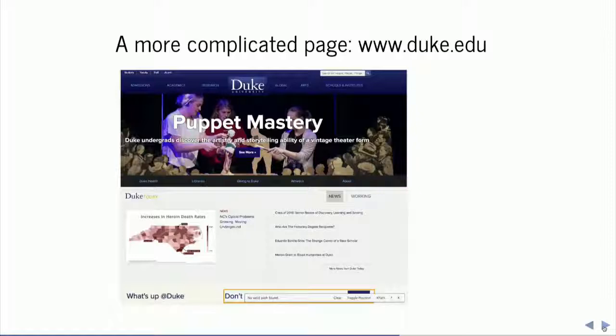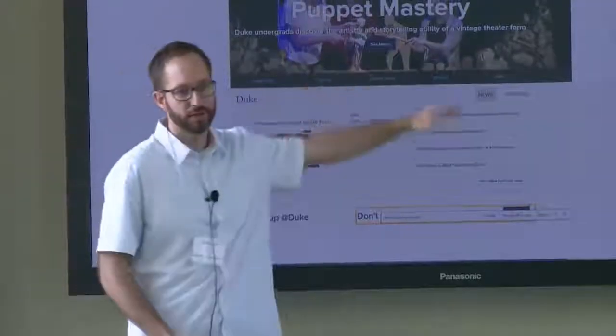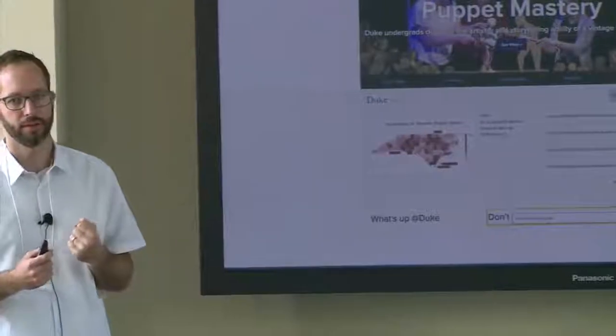Very often the XPath does not work, or it works only after much interaction with the page — remember the tricky part is interacting with the web page to learn which part of the HTML you need. So it's very often useful to take another path: something called the CSS selector. We're going to use that to work with a more complicated page — the homepage of Duke University — which, unlike our Wikipedia page, is a fancier page with interactive features and JavaScript.